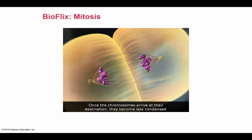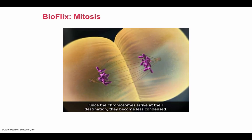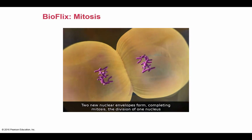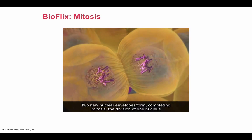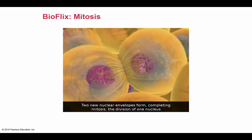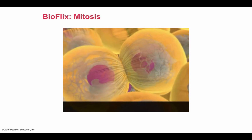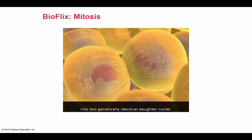Once the chromosomes arrive at their destination, they become less condensed. Two new nuclear envelopes form, completing mitosis, the division of one nucleus into two genetically identical daughter nuclei.